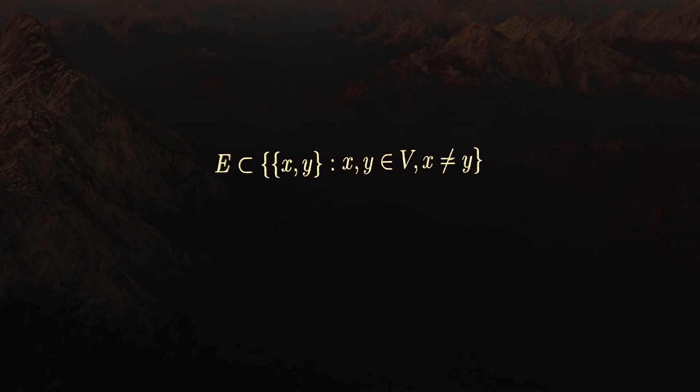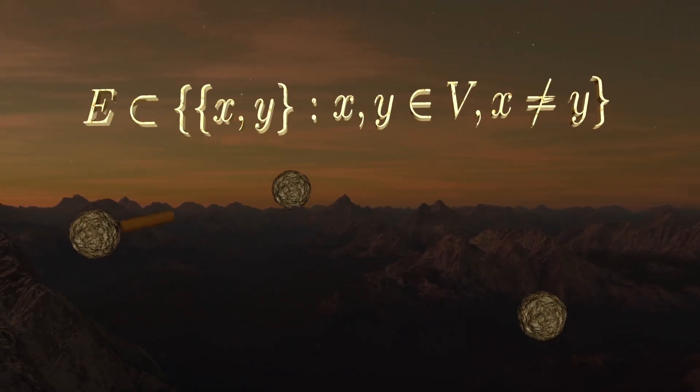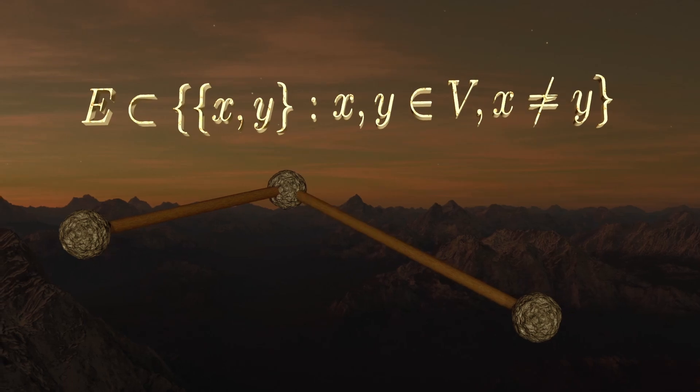Now, we define an edge to be a set of two distinct vertices. Doing it this way means that given any two distinct nodes, there could possibly be an edge between them.